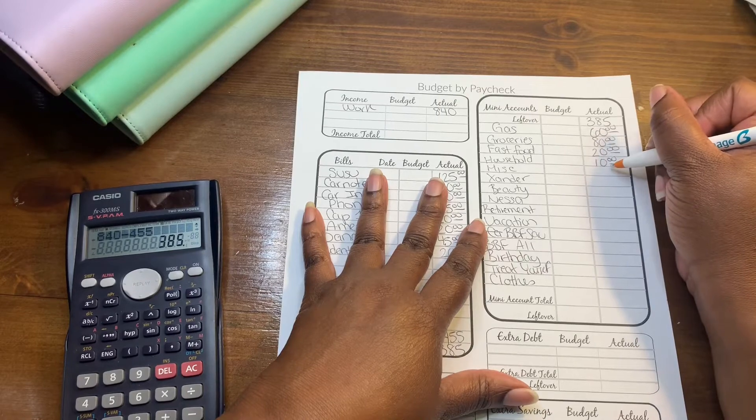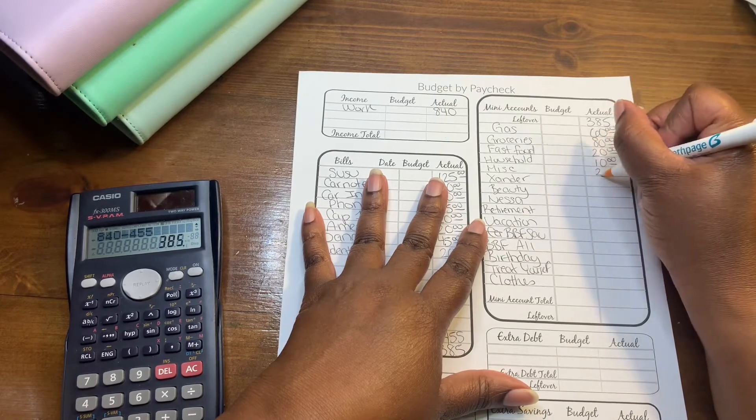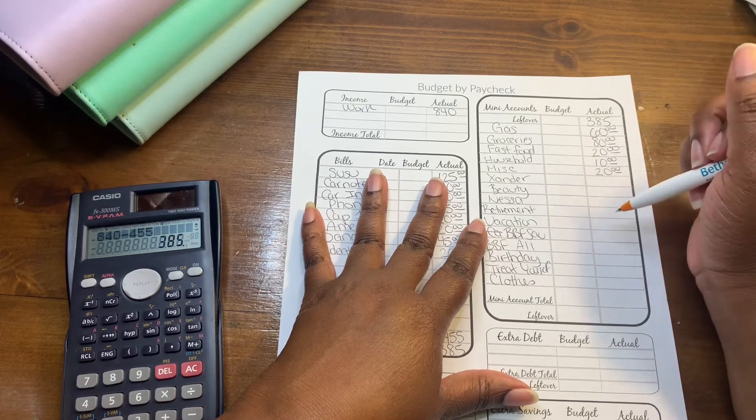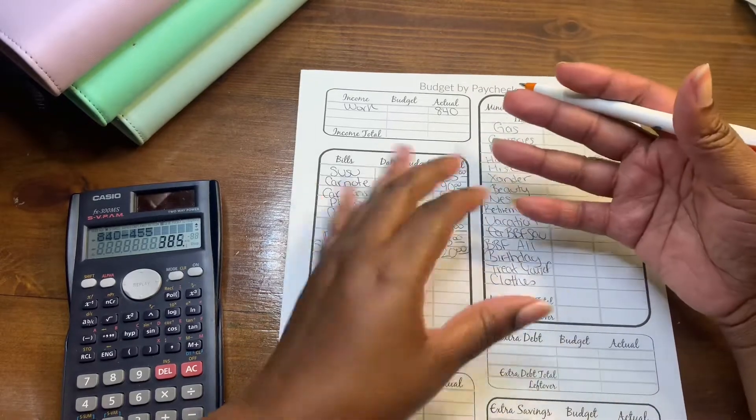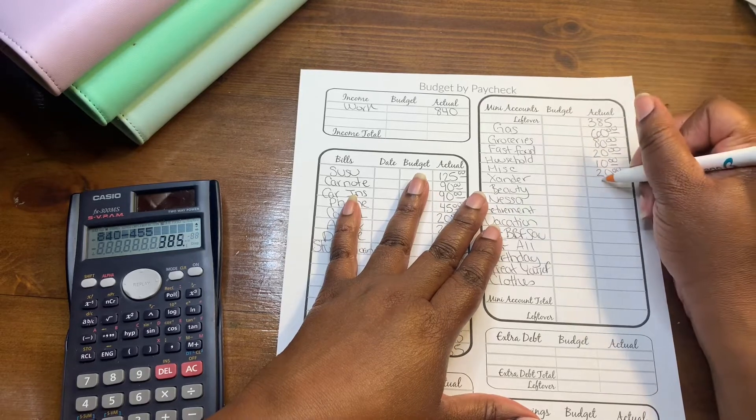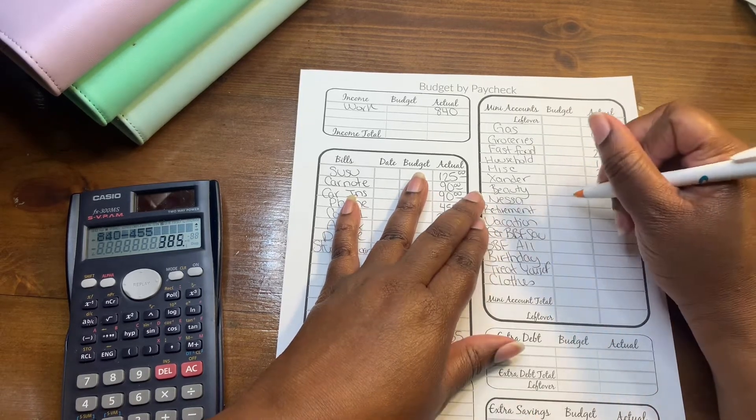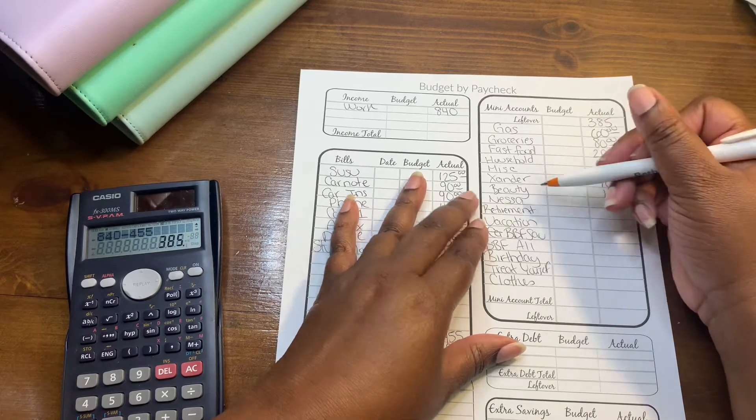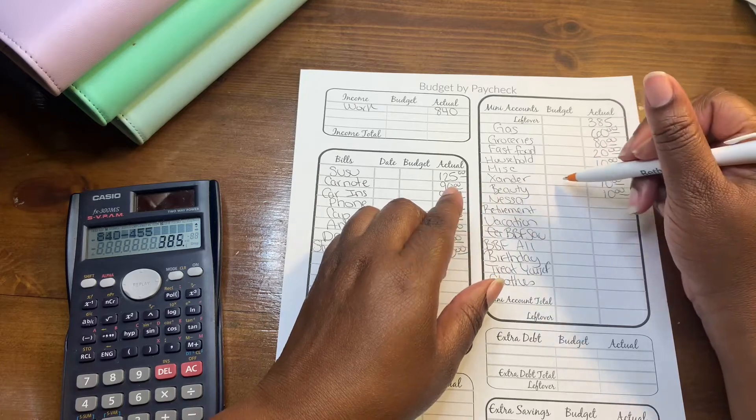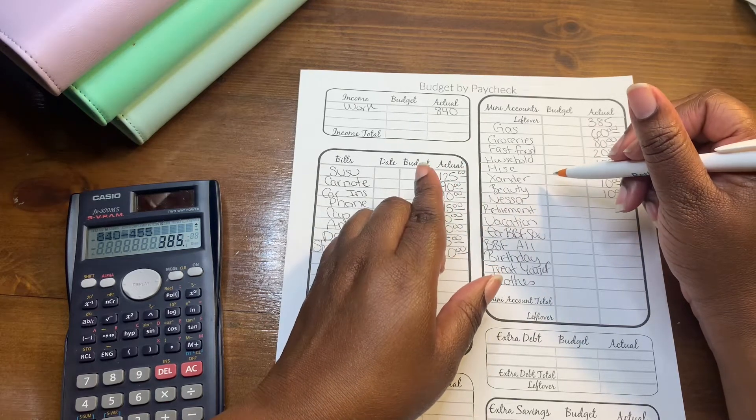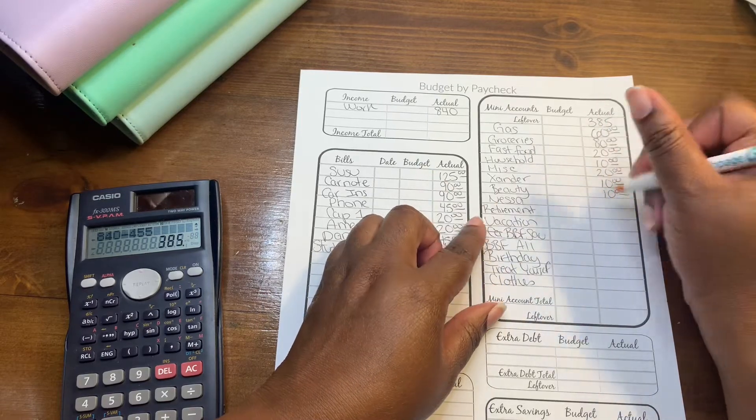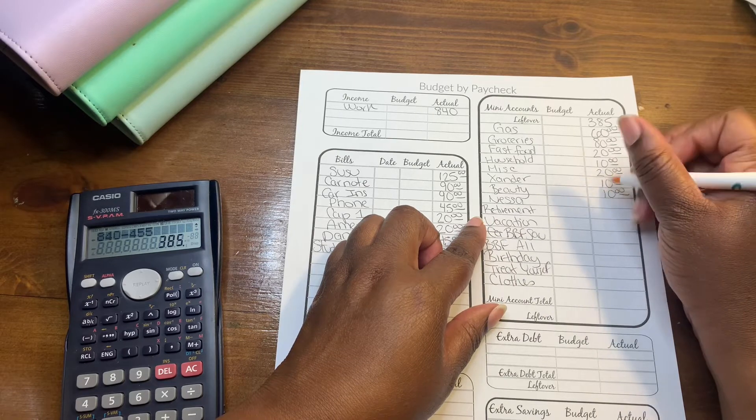Fast food will be getting $20. $20 works for us, we don't go anywhere crazy. Household is $10. Miscellaneous is always gonna be $20 because when I go over at the grocery store that $20 comes in handy. Zander will be getting $10. I need to save $100 for his groomer. His next appointment is in August, so I have from now until August to save $100 for him.